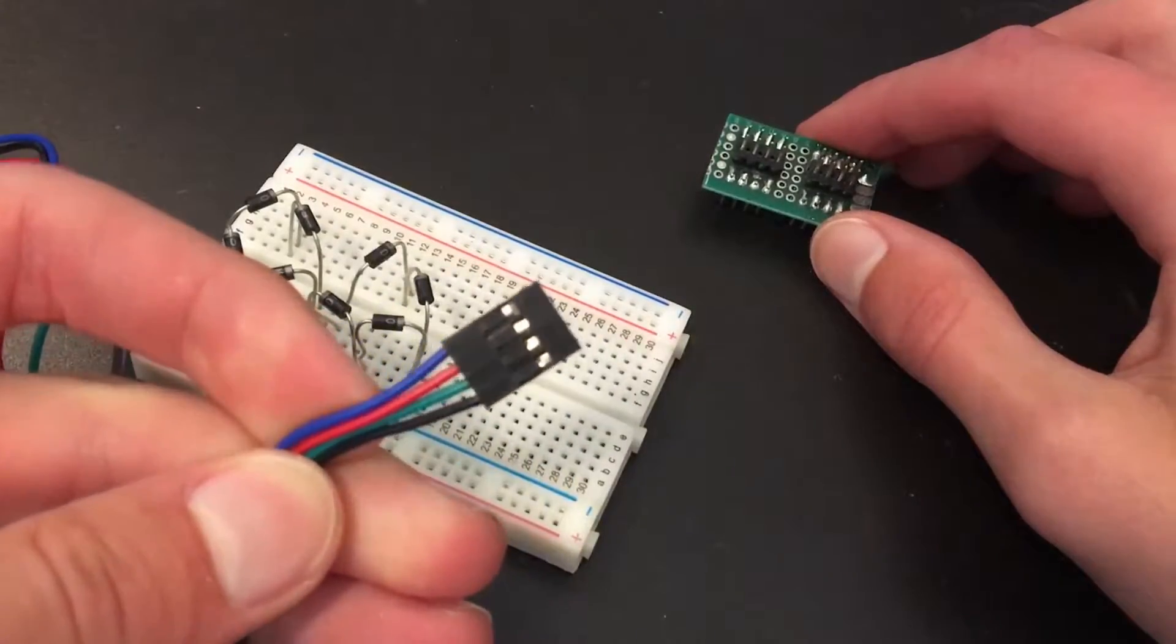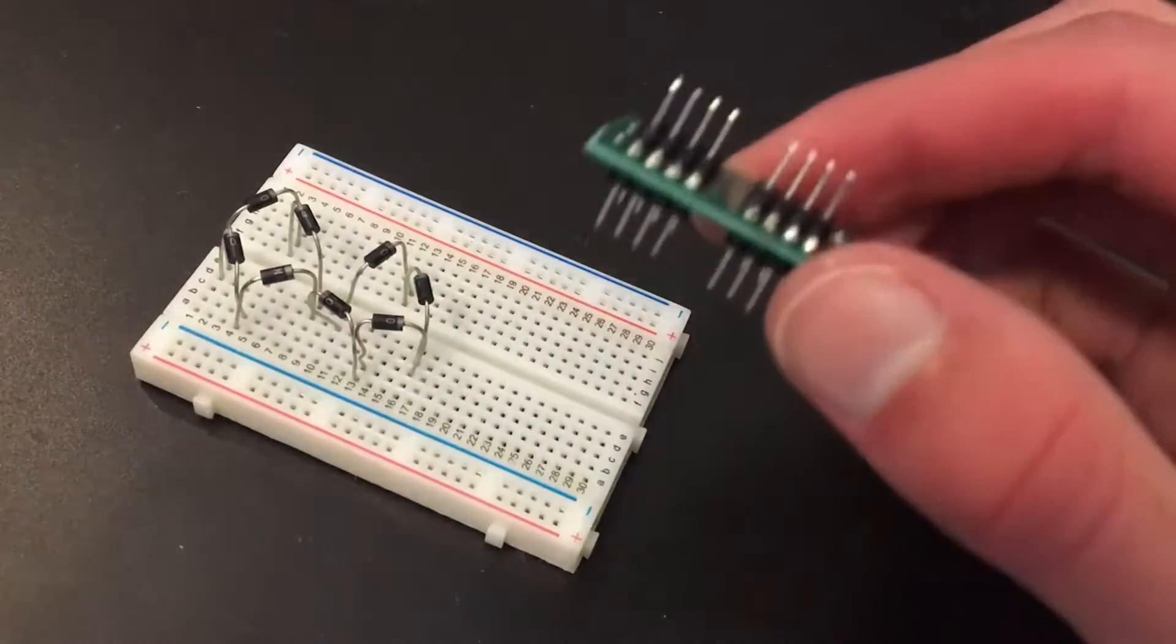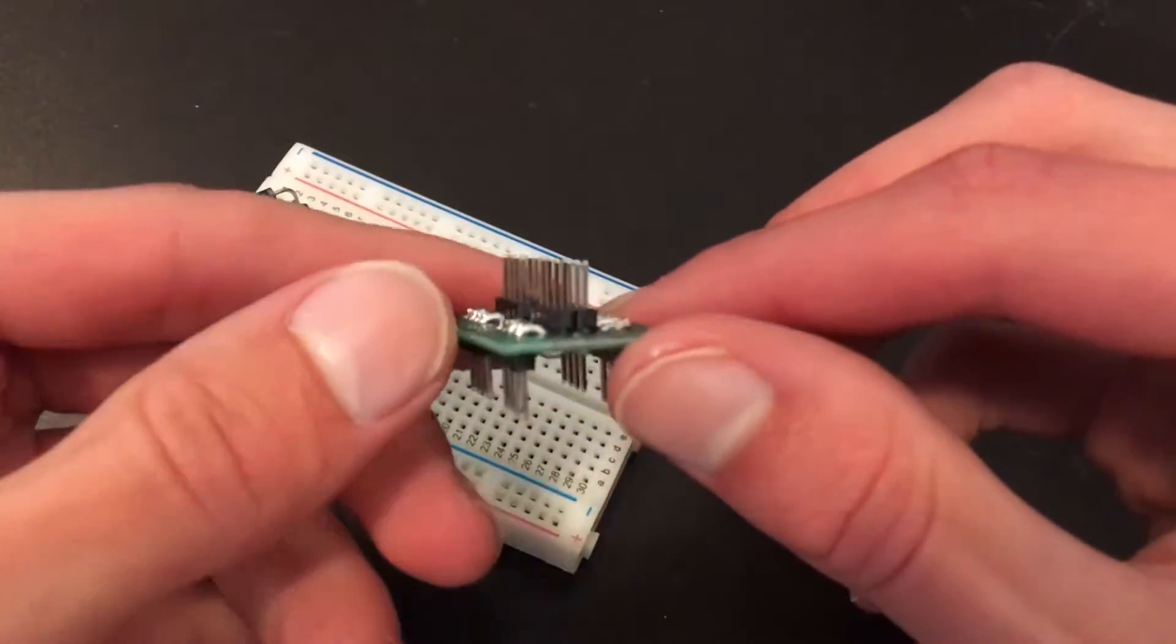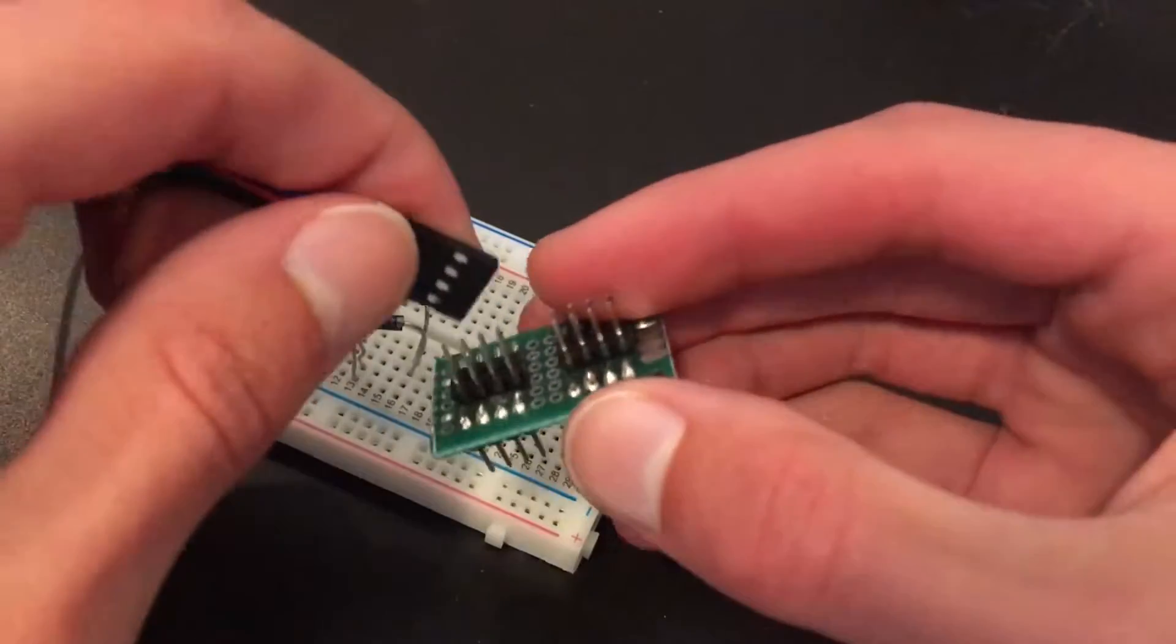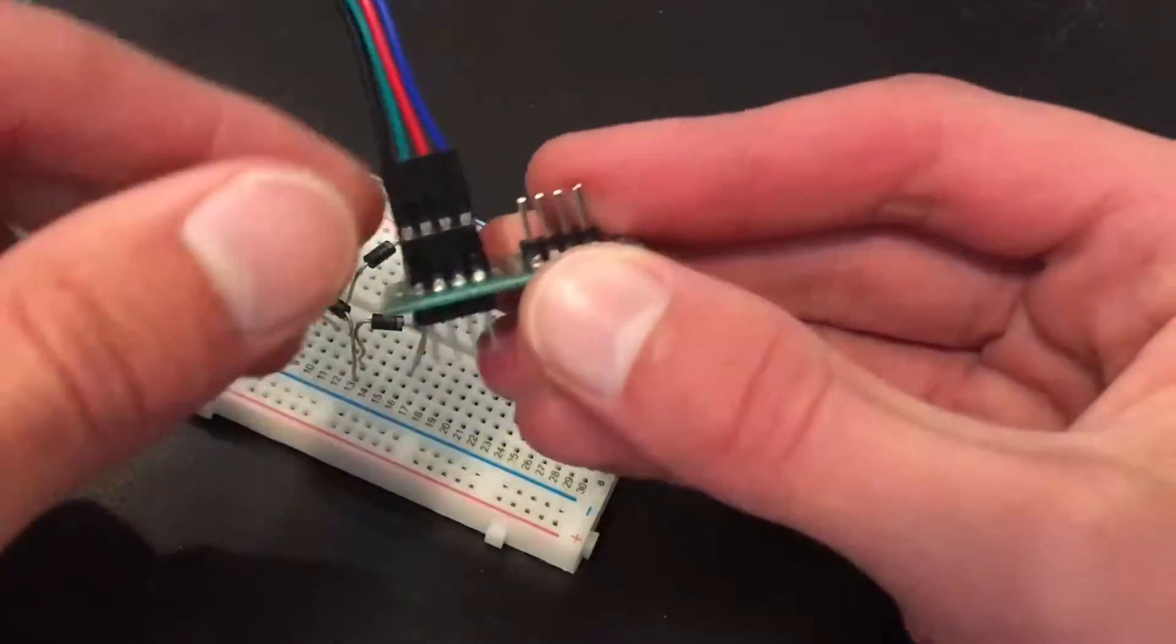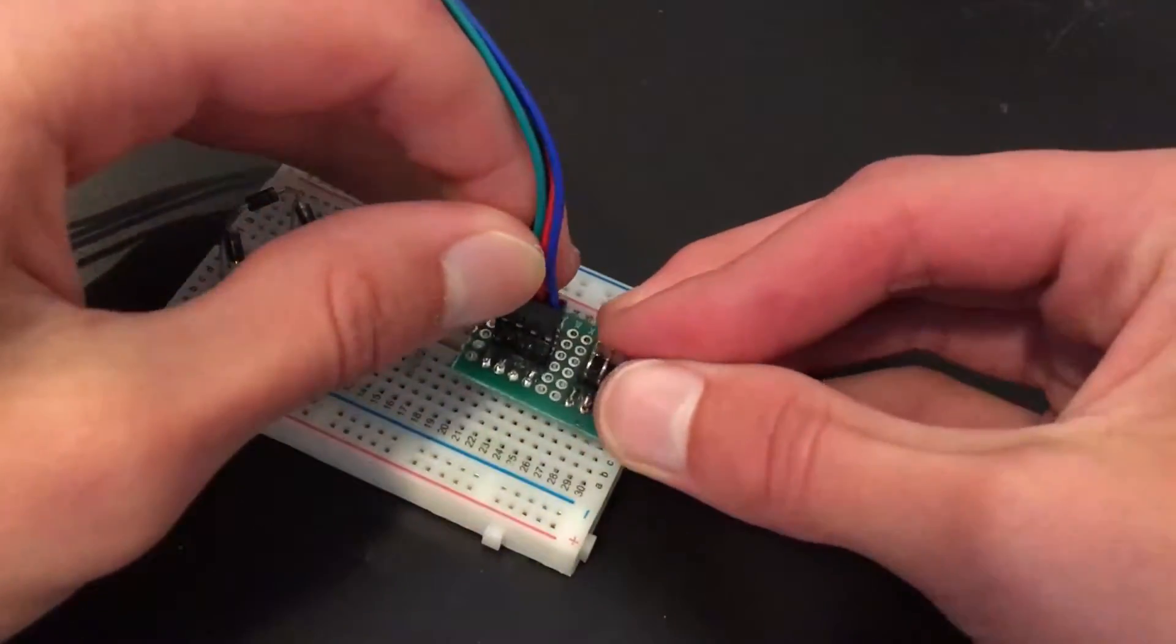Because the stepper motor has a female D-sub connector on it, I made this little PCB so that I can just put the stepper motor connector on the PCB and then plug it directly into the breadboard.